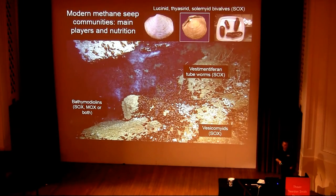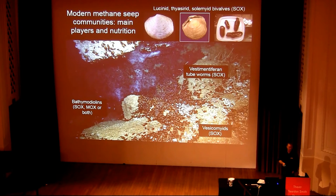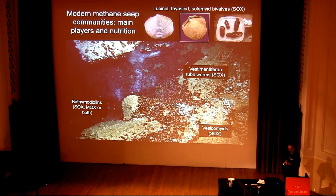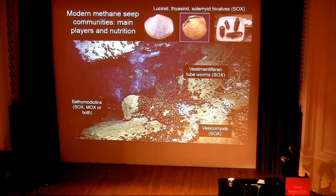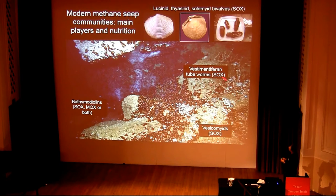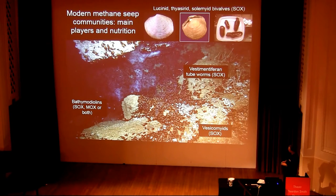The animals which dominate modern methane seep communities are those which have symbiotic relationships with either sulphide-oxidising bacteria or methanotrophic bacteria. These include vestimentiferan tube worms belonging to the polychaete family Siboglinidae, all of which have sulphide-oxidising bacterial symbionts in their tissues. They are entirely reliant on these symbionts — they have no mouth, gut, or anus at all as adults.